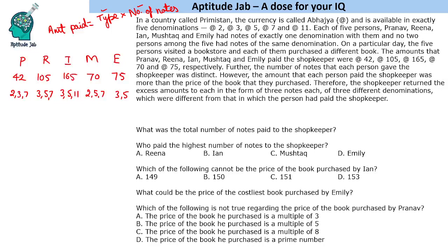Now we try to find out the denomination type and number of notes. Denomination 11 is unique — it only appears as a possibility for the person who paid 165. So that person paid in notes of 11, and the number of notes will be 15.